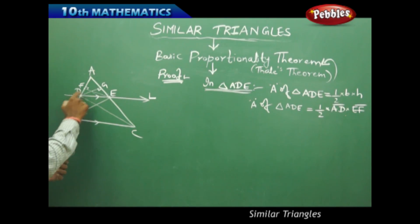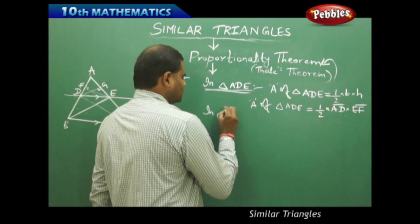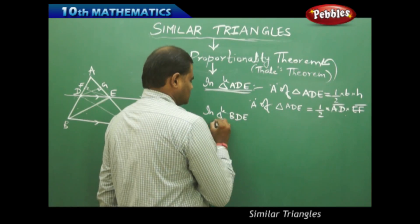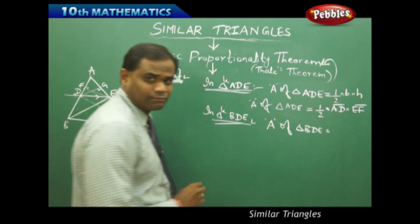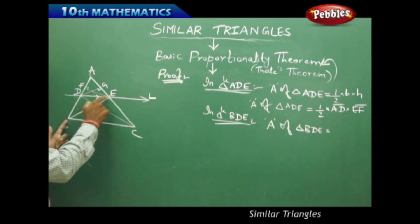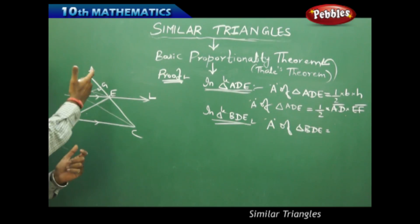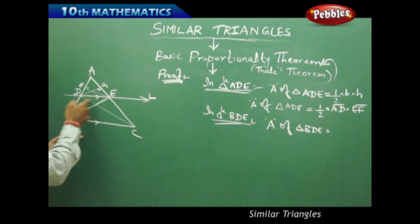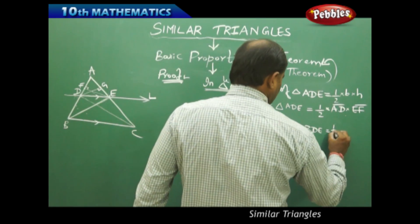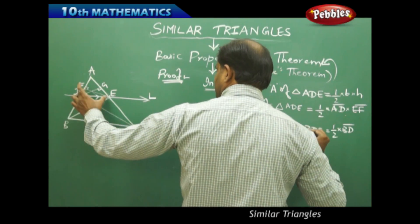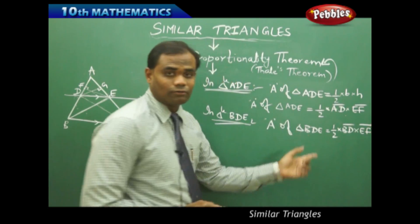Similarly, I take triangle BDE and find its area. Area of triangle BDE is also half times base times height. Here the height EF lies outside the triangle because triangle BDE is an obtuse-angled triangle — for an obtuse-angled triangle the height always lies outside. Therefore, area of triangle BDE equals half times BD times EF.